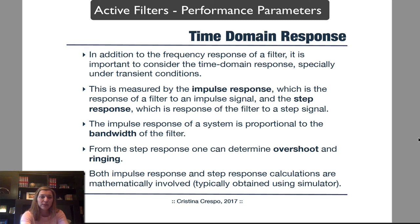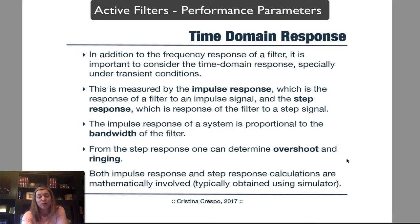The step response is the response of the filter to a step signal, which is basically an abrupt change in level — a perfect square pulse. The impulse response is proportional to the bandwidth of the filter: the narrower the impulse response, the higher the bandwidth. For the step response, we are interested in determining the amount of overshoot and the amount of ringing. The overshoot tells us how far above the final output value the signal goes before settling, and the ringing determines how much oscillation there is around the final value, affecting settling time.